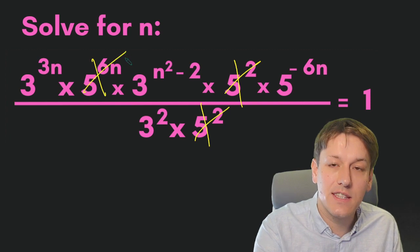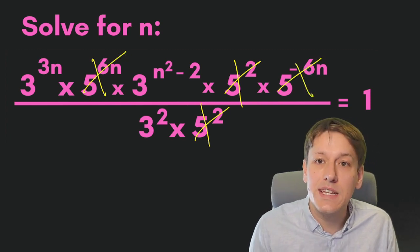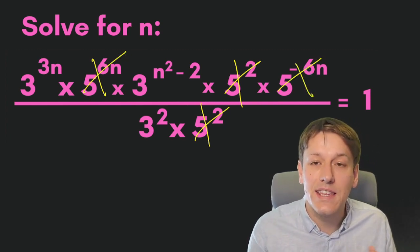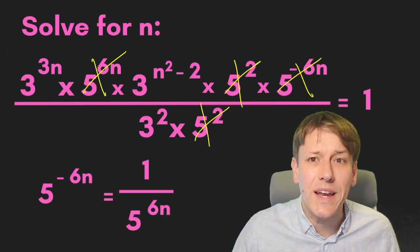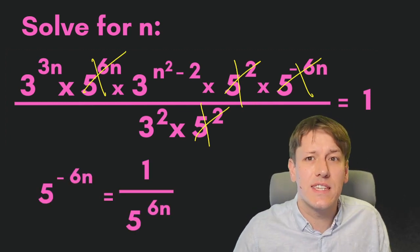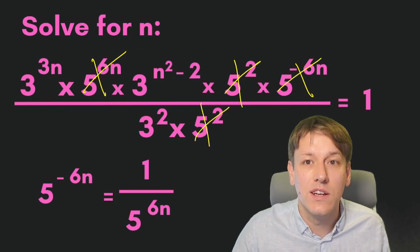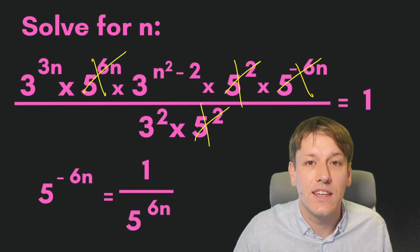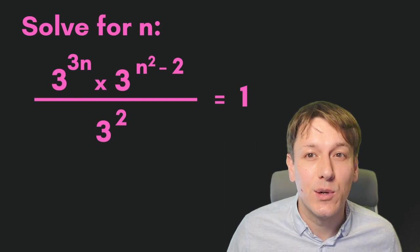I've also got 5 to the 6n times 5 to the minus 6n, and again they cancel each other out. Remember, 5 to the minus 6n is the same thing as 1 over 5 to the 6n, so if I multiply that by 5 to the 6n we just get 1, so they cancel in our fraction. We can now write this without all of those 5s and it looks a lot friendlier.